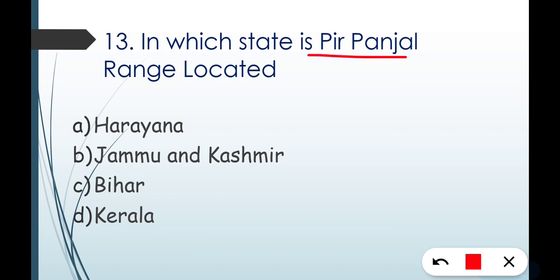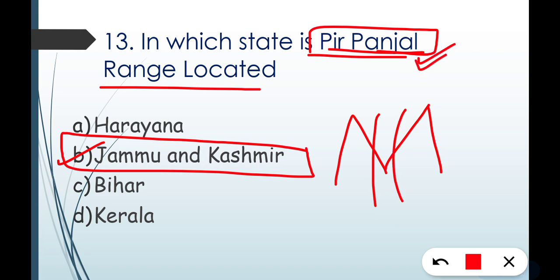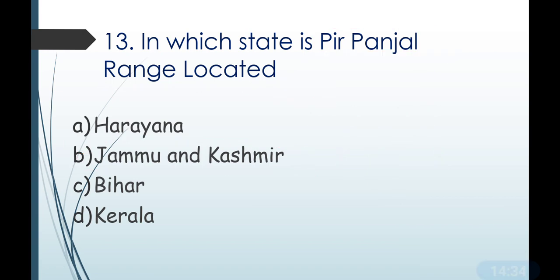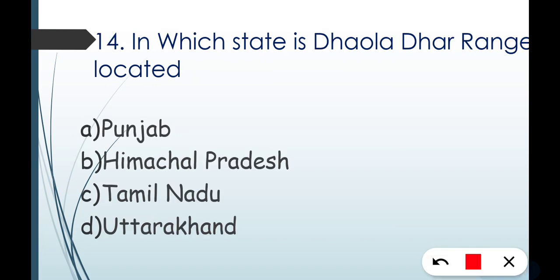Question number thirteen: in which state is Pir Panjal range located? Pir Panjal, Karakoram Range, Zanskar Range — all are located in Jammu and Kashmir. So the correct answer is Option B — Jammu and Kashmir. There is also a Pir Panjal pass — a pass is a route between two Himalayan mountains. Do watch the separate video on passes for an important trick.